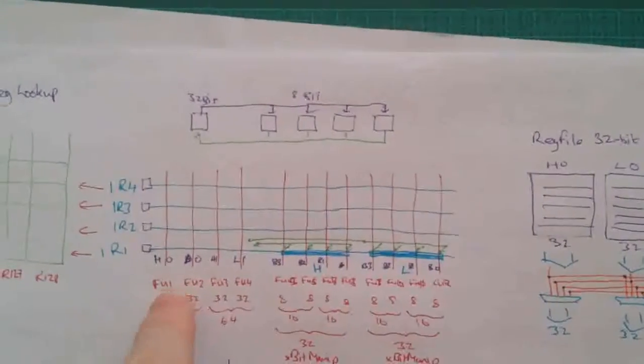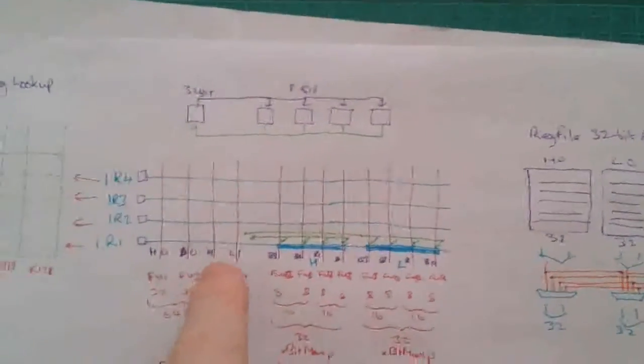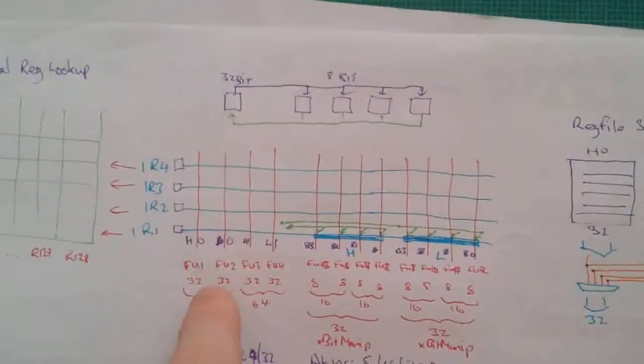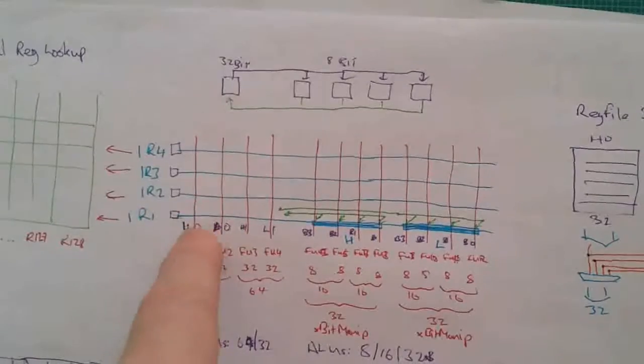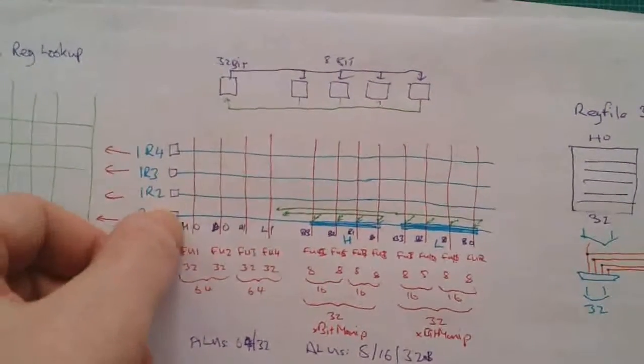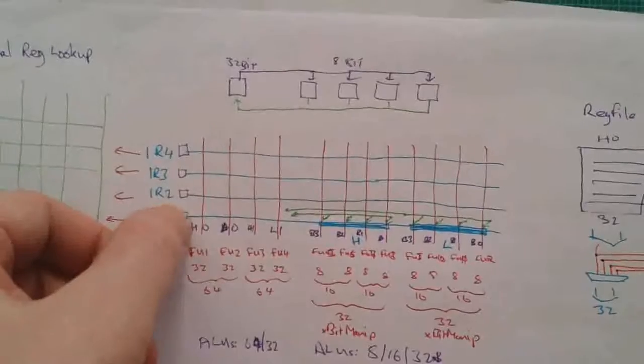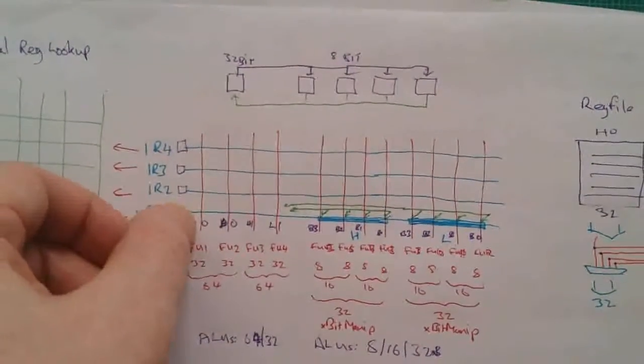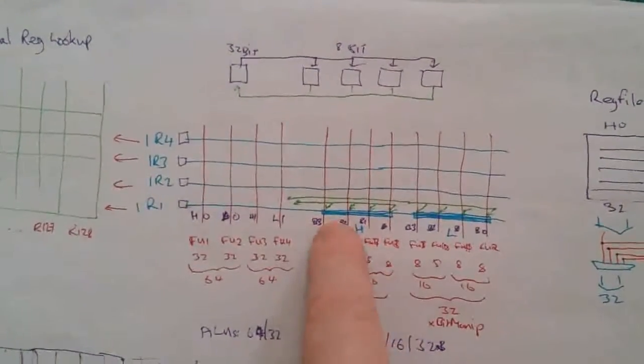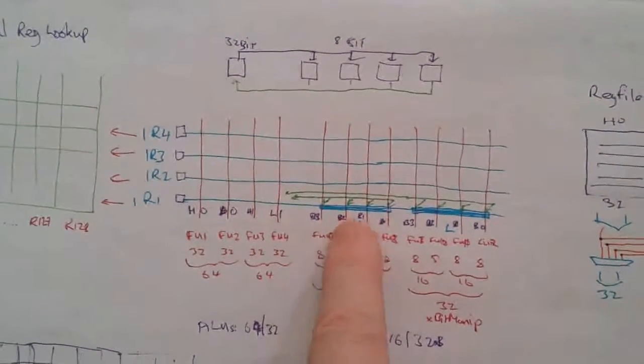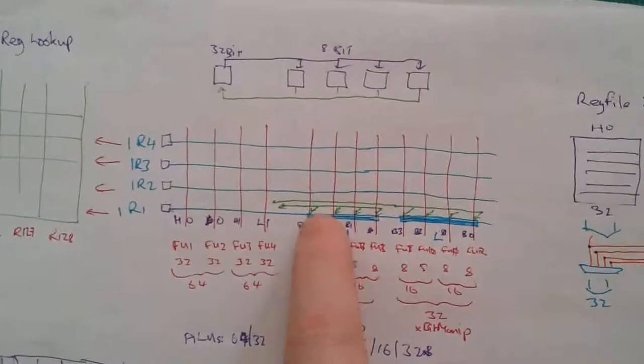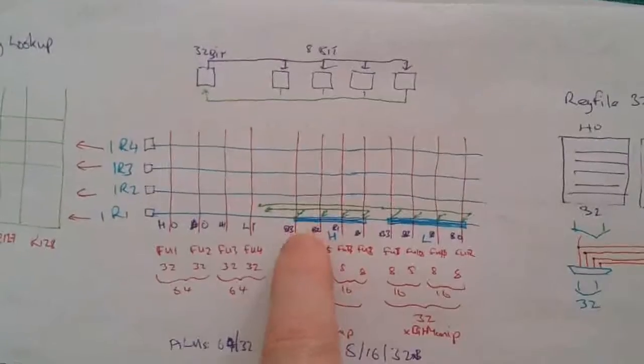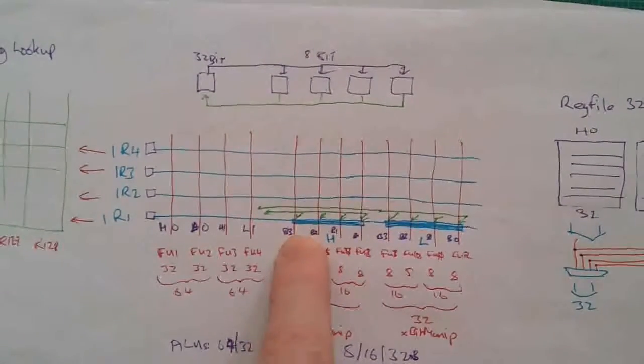So one additional thing on here is an addition to the standard scoreboard system. A register which is required for a 32-bit operation, obviously cannot then be used. Its byte lanes three, two, one, zero cannot be used for 8-bit operations.